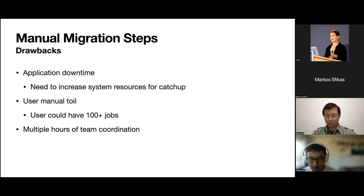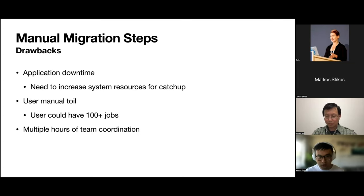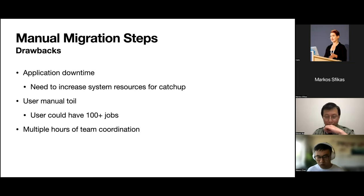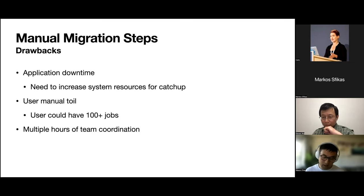There are many drawbacks to manual migration. First, there's application downtime — during which Kafka lag increases and consumers need more resources to catch up. Second, there's significant user manual toil. In a multi-tenant environment, users could have over a hundred jobs. For a single application, migration can take tens of minutes, including the draining process and redeployment. For multiple application owners, it might take over an hour. For the infrastructure team, it can take multiple hours to coordinate with all users in order to tear down the Kafka cluster.